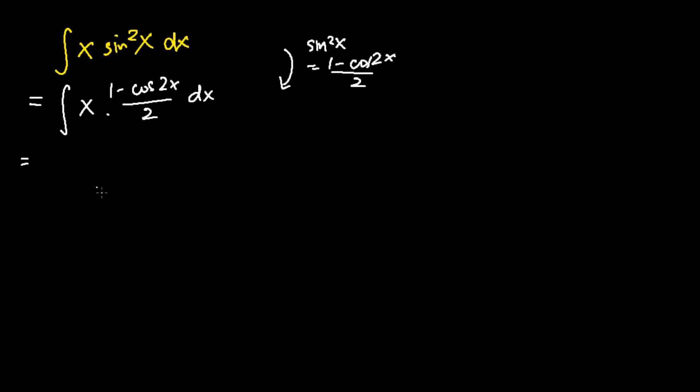And the next step I will do is I will take out the half. I will get the following. After which, I will expand within the integral. So I will get x subtracting away x cosine 2x dx.